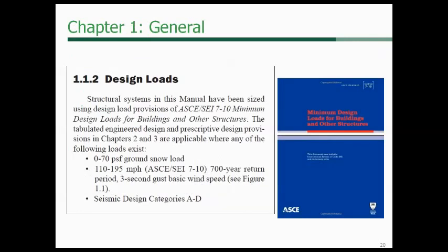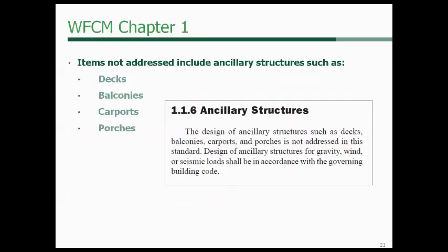All design loads come from ASCE 7-10. Seismic design categories A through D are per Chapter 12, Section 14, the Simplified Alternative Structural Design Criteria for simple bearing wall or building frame systems. Wind speeds look higher than before because we've gone to a 700-year return period, and snow loads range from 0 to 70 psf.